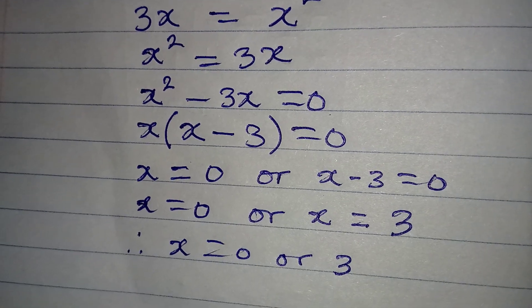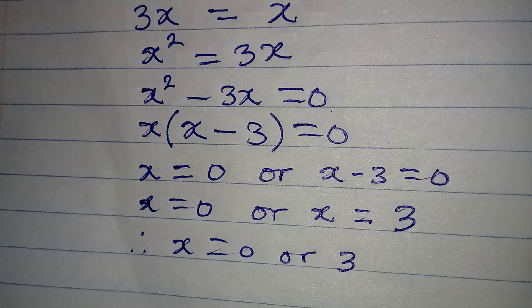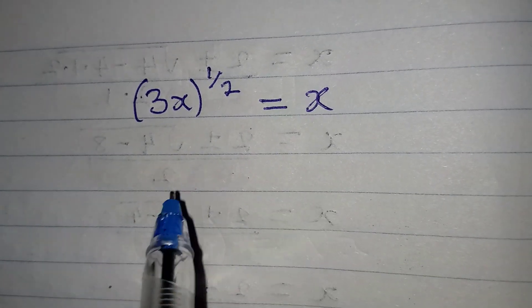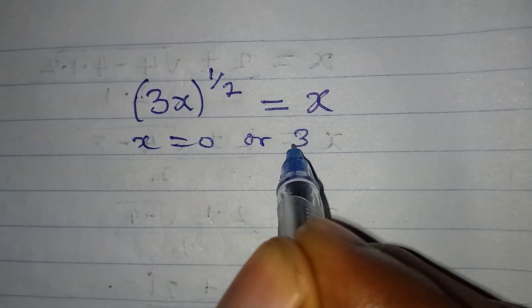But then let's put this into the original equation and see what we have. Okay, so here is the original equation and we have our x to be equal to 0 or 3.